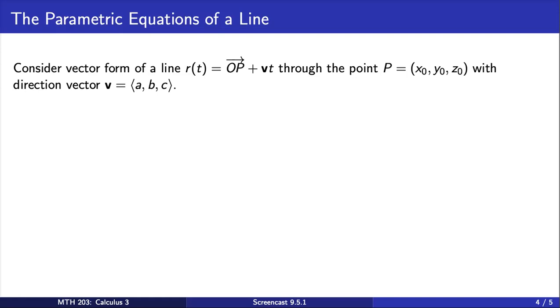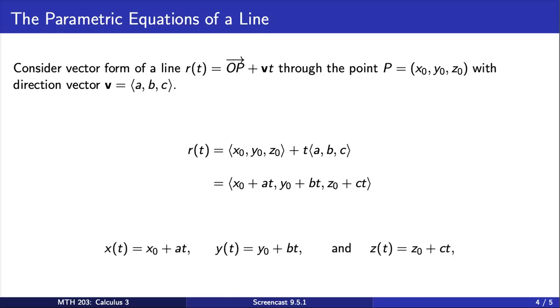Using vector addition, we can use the coordinates from the point P and the components of the vector V to describe the line in terms of a single vector. And from this last vector that we have here, we get three equations that describe the x, y, and z coordinates of points on the line in terms of the variable T.